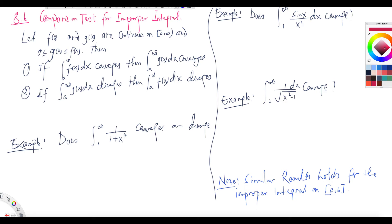In the last video we discussed how to evaluate the improper integral. There are two types: one where one or both limits of integration are infinity, and a second type where the limits are finite but the integrand is infinity at one or both limits, or at some point between a and b where the function is not continuous. In that case we use a limit approach, similar to what we did with infinite limits.